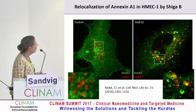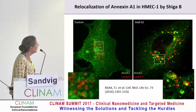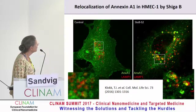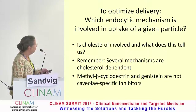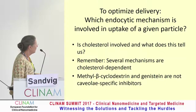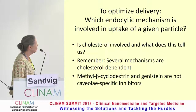This shows how you can get intracellular changes by cross-linking GB3 with Shiga toxin. Here annexin A1 is in green and the lysosomal marker LAMP1 is in red. In the control cell, after cross-linking at the cell surface, you see bigger vacuoles and relocalization of these proteins. To optimize delivery, people often ask which endocytic mechanism is involved in uptake of a given particle — for instance, is cholesterol involved? It's important to remember that several mechanisms are cholesterol-dependent, and when you use cyclodextrin to extract cholesterol or the tyrosine kinase inhibitor genistein, these are not specific inhibitors for caveoli, although they are often used as such.